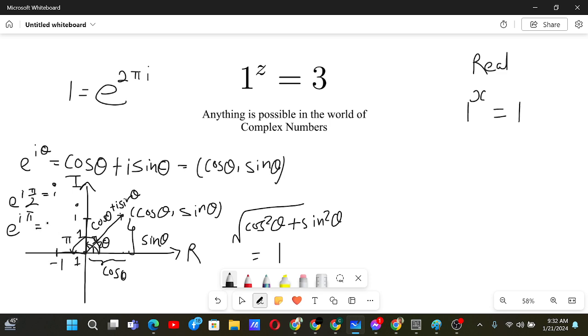Now if it was e to the power i times 3π/2, the point will be over here at length 1, which is -i. Now if it is e to the power i times 2π, the point will be over here, and that's 1, because the angle 2π should be there. So in this way you can understand why e to the power 2πi is 1.